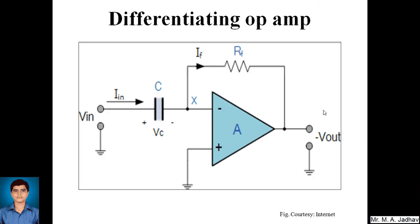Next is the differentiating operational amplifier. Again, it is a modification of the inverting op-amp, but now the capacitor is placed at the input instead of the feedback. In the integrating op-amp the feedback is taken via a capacitor; here in the differentiating op-amp, the input is given through a capacitor. The feedback resistor RF remains connected at junction X.